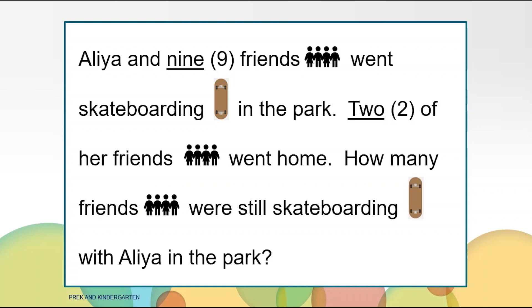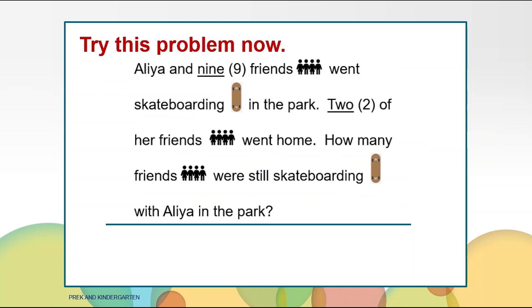Continue to picture the story in your mind. Aaliyah and nine friends went skateboarding in the park. Two of her friends went home. How many friends were still skateboarding with Aaliyah in the park? We have a question — we get to figure out how many friends were skateboarding with Aaliyah in the park. How many friends were skateboarding with Aaliyah in the park?